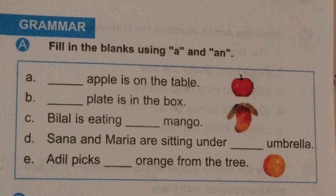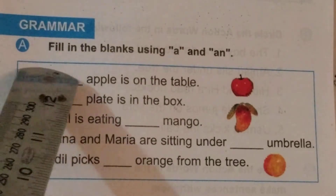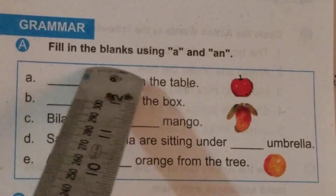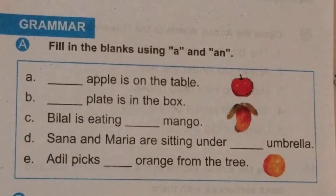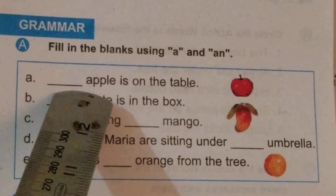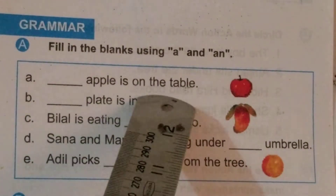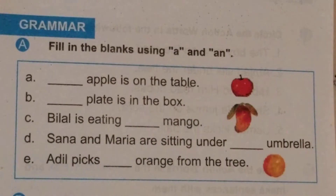Now let's start the work. Children, in exercise A, we will fill in the blanks using A and AN. Now let's read with me. Dash — apple is on the table.